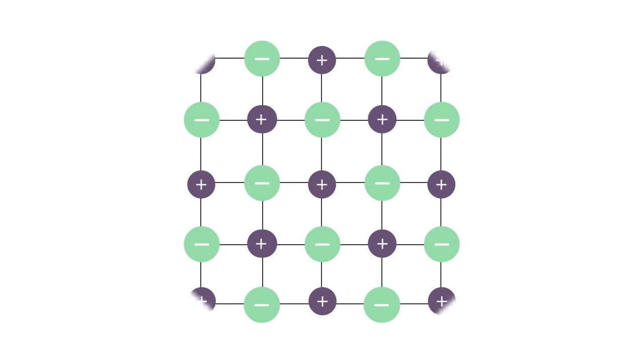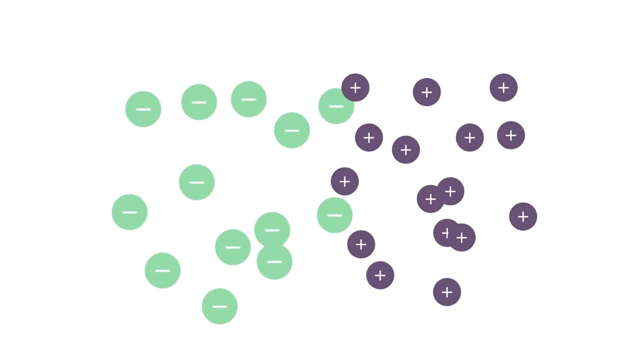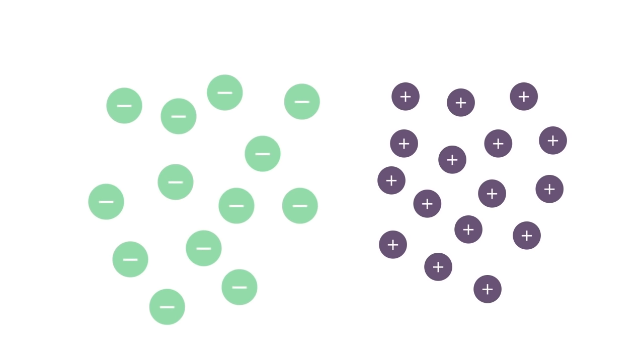When we apply a force, it breaks the regular, repeating pattern of oppositely charged ions, causing ions with like charges to come close to one another. The ensuing repulsion breaks the lattice structure.